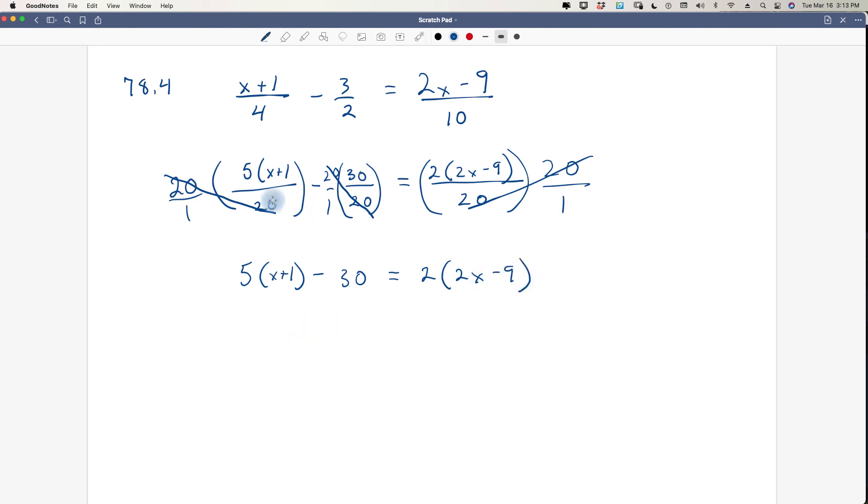Now we distribute. This is the step I said you could skip. If you could do this such that you could just write down 5x plus 5 down here and skip this, you can do it. If not, write it down. It's okay to write it down. So let's distribute. 5 times x is 5x, 5 times positive 1 is positive 5, minus 30 equals 2 times 2x is 4x, 2 times negative 9 is a negative 18.